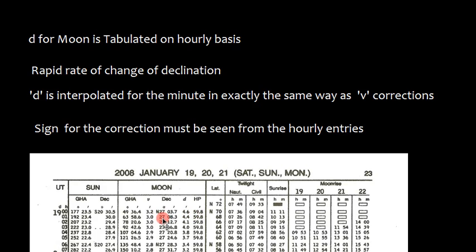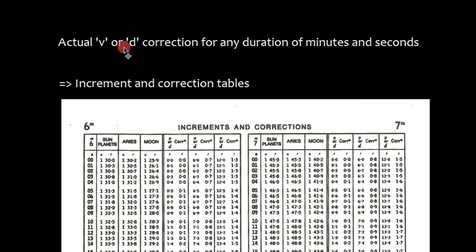01 is 27 degrees 08.3 minutes and D correction is 4.4. That means this is decreasing. That's all. Actual V or D correction for any duration of minutes and seconds is given in the increment and correction table and we pick up these values from the increment and correction tables. That's all.